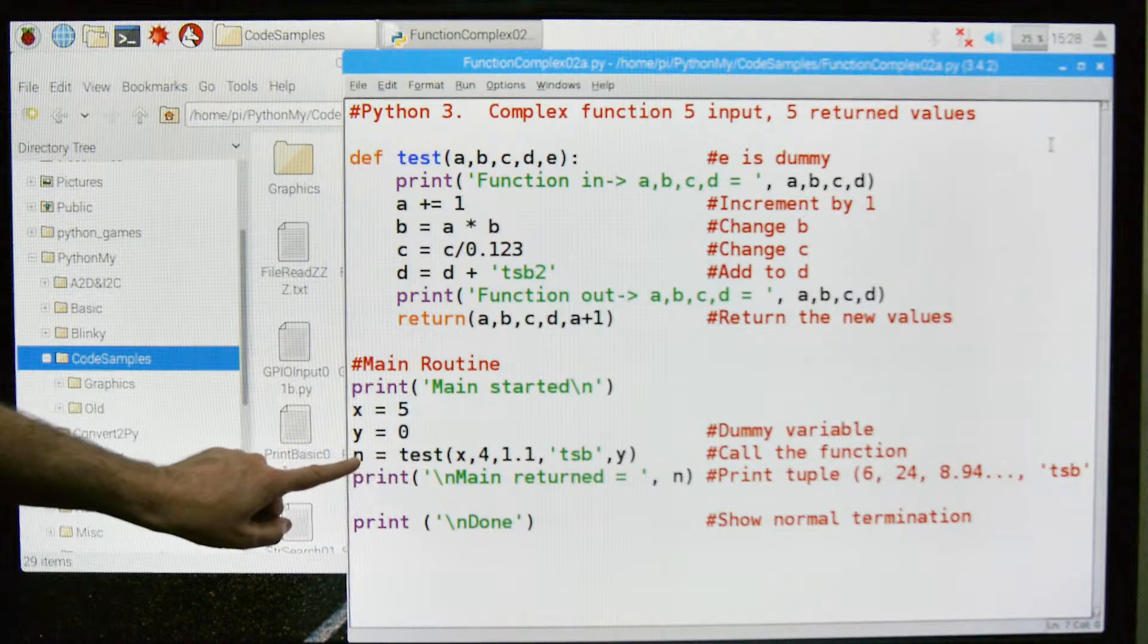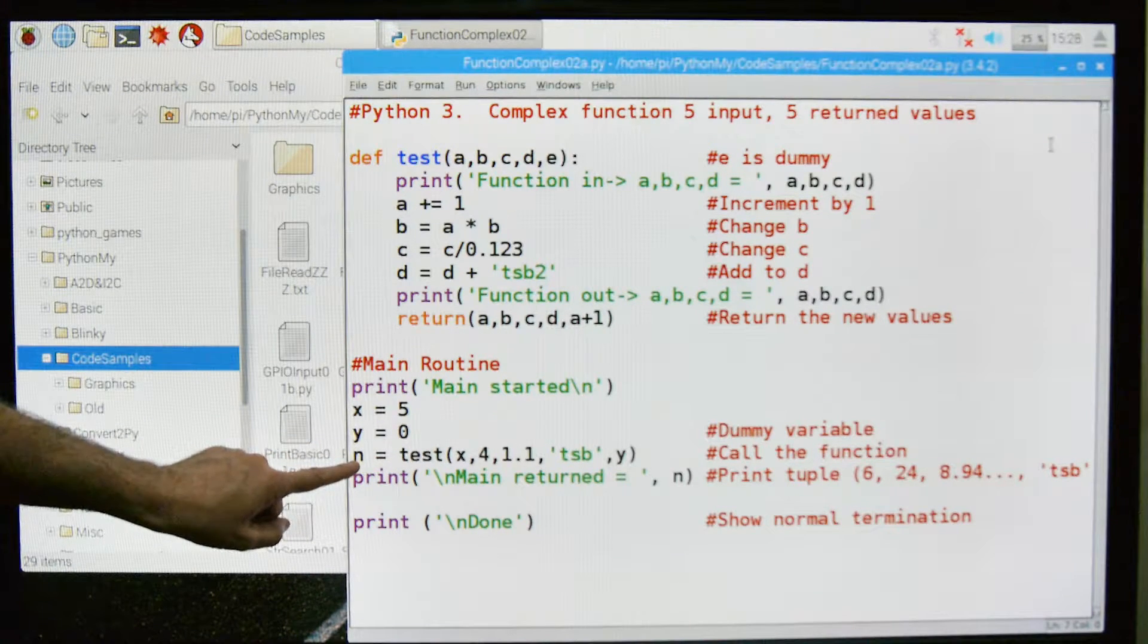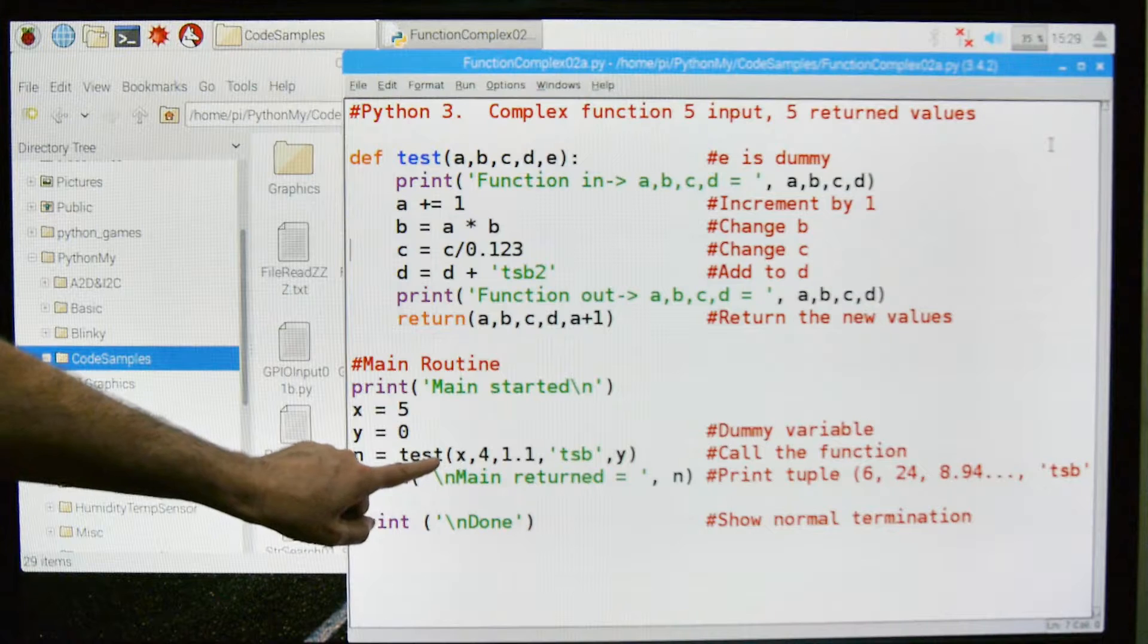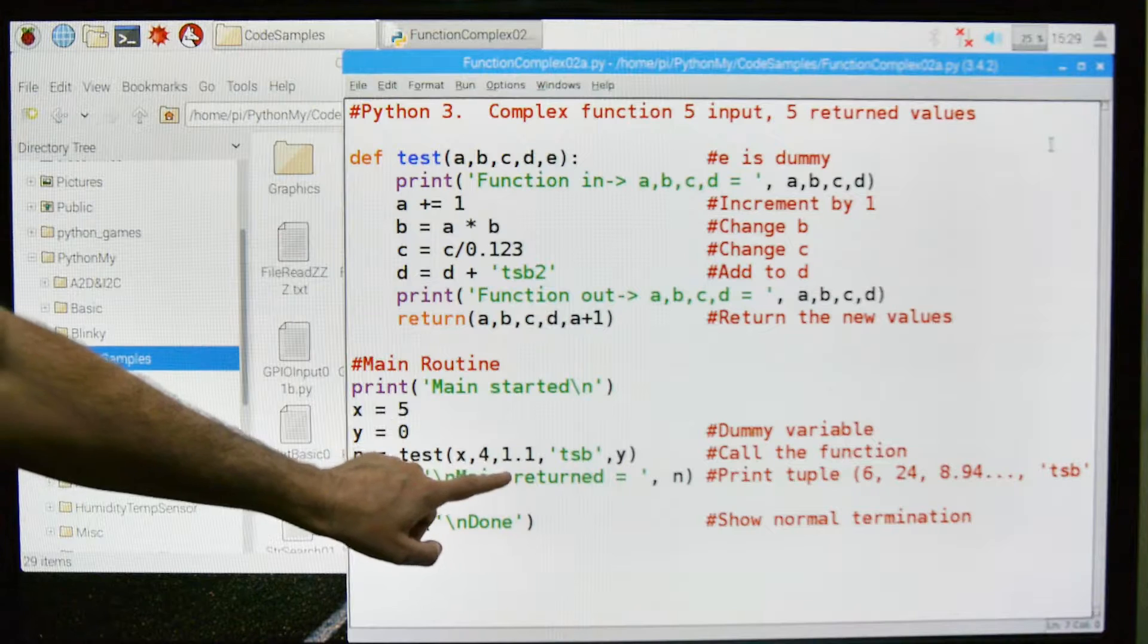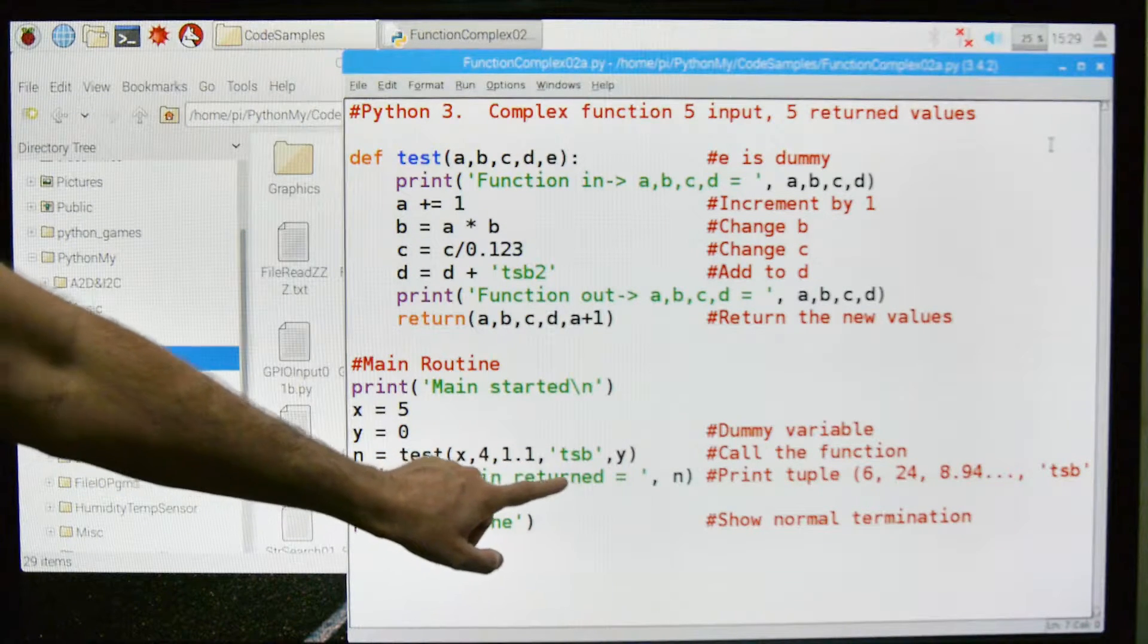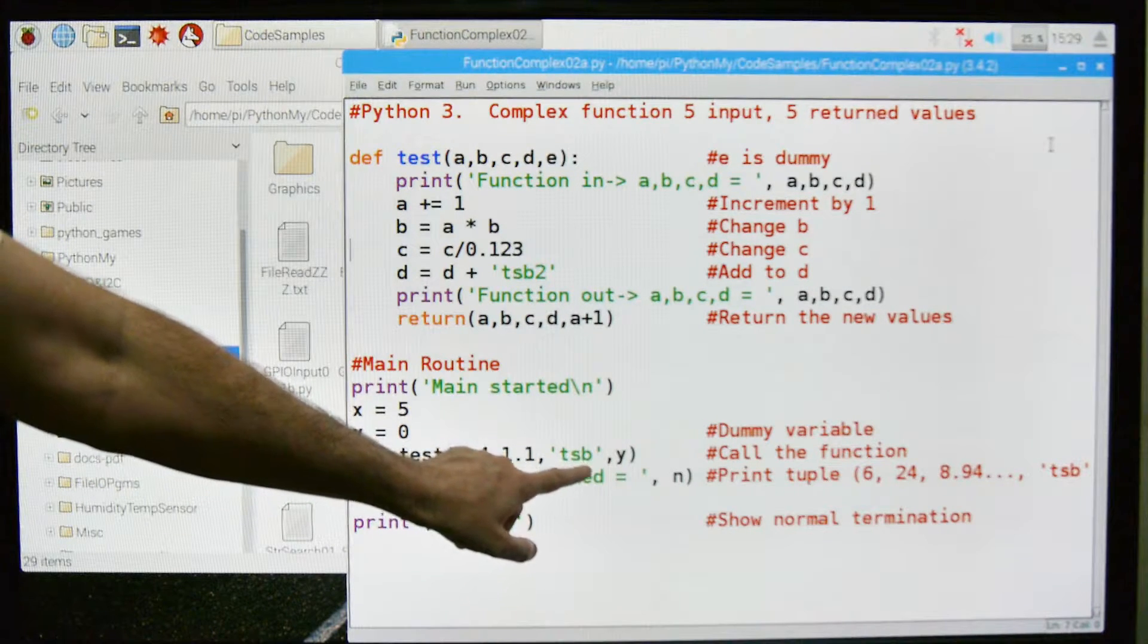Here is our function call, and here's where we're going to assign the results back from the function. So our function call, we're putting in x, which is the 5, we're putting in 4, which is an integer constant, 1.1, which is a float constant, TSB, which is a literal constant.